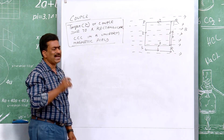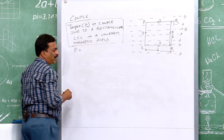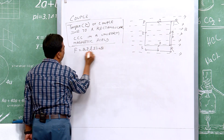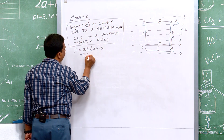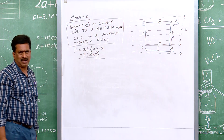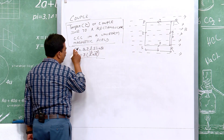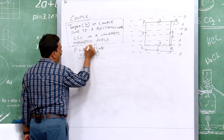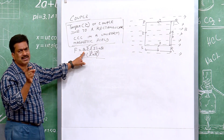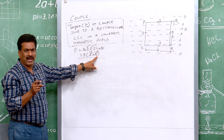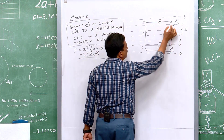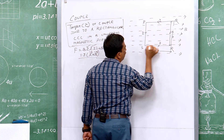Before proceeding, let us recapitulate: if a current-carrying conductor produces a magnetic field, the force is F = BIL sinθ, or in vector form F = I(L × B). Here L is the length of the conductor, I is the current flowing through it, B is the magnetic field induction, and θ is the angle between L and B. The magnitude of the force is BIL sinθ.